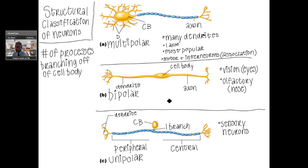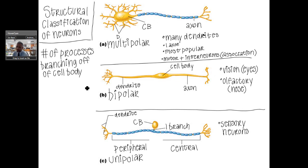The bipolar neuron is a specialized one. You can see it's continuous — dendrite, cell body, and axon. The cell body is the part that pops up in the middle. You'll find special bipolar neurons called rods and cones in the eyes for vision, and olfactory neurons for smell. But I'll spend most of my time on multipolar and unipolar.